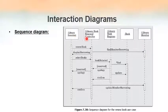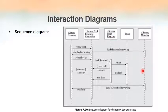Even though the lifetime of an object spans from its creation to its destruction, the rectangular shape shows only when the object is active during the interaction. For example, the library member object is active from one point, then becomes inactive, and then becomes active again at another point in time. That is what we represent with the rectangular activation shape.